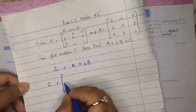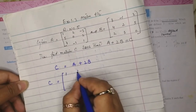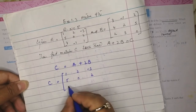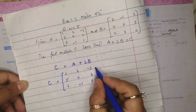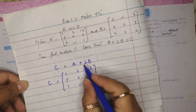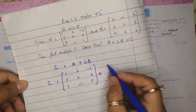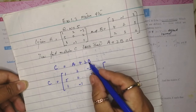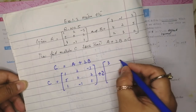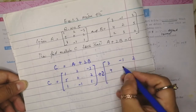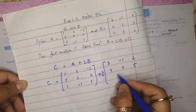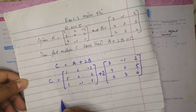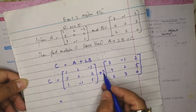We write matrix A: [1, 2, -3, 5, 0, 2, 1, -1, 1]. Then there is a plus sign, then 2, then matrix B: [3, -1, 2, 4, 2, 5, 2, 3, 0].